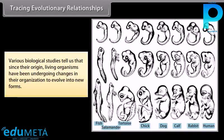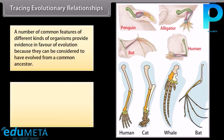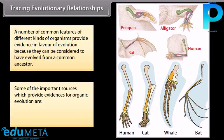Various biological studies tell us that since their origin, living organisms have been undergoing changes in their organization to evolve into new forms. A number of common features of different kinds of organisms provide evidence in favor of evolution, because they can be considered to have evolved from a common ancestor. Some of the important sources which provide evidence for organic evolution are homologous organs and analogous organs.